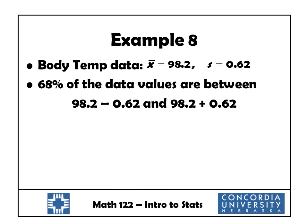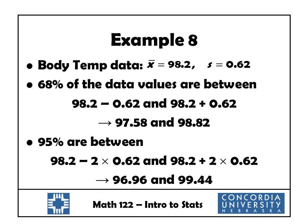Let's apply this to our body temperature data: mean x-bar is 98.2 and standard deviation is 0.62. By the empirical rule, 68% of data values are within one standard deviation — that's 98.2 minus 0.62 to 98.2 plus 0.62, giving a range of 97.58 to 98.82. About 95% are within two standard deviations: 98.2 minus 1.24 to 98.2 plus 1.24, giving 96.96 to 99.44.